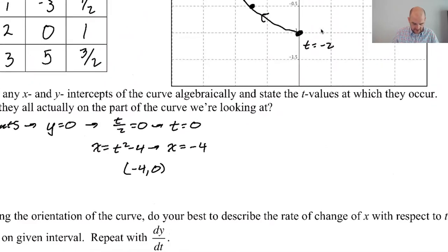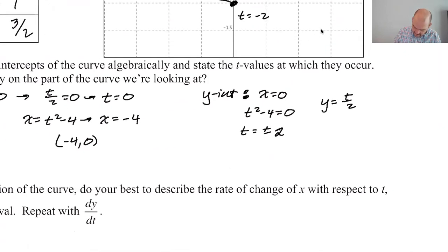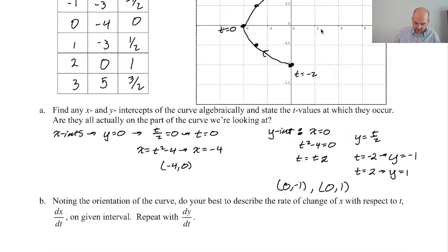And then the y-intercept is when x equals 0, so y-intercept is going to be when x equals 0, which means that t squared minus 4 equals 0, which means t equals plus or minus 2. And then if t equals plus or minus 2, and y equals t over 2, that means that if t equals negative 2, y is equal to negative 1. If t equals positive 2, y is equal to positive 1. So we're going to get 0, negative 1, and we're going to get 0, 1.